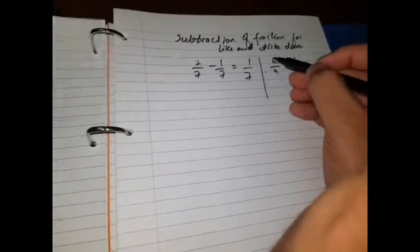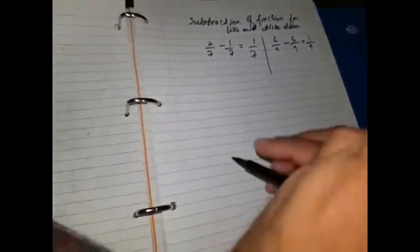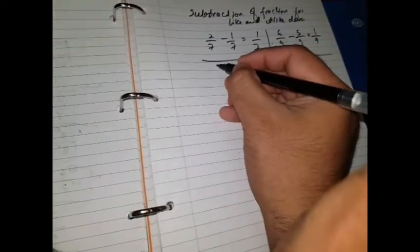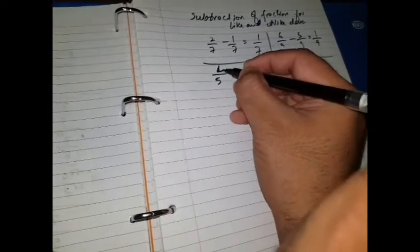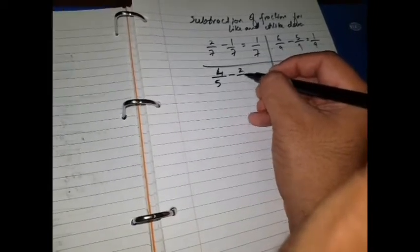Another question when denominator is same: 4 over 5 minus 2 over 5. Denominator is same, no issues. 4 minus 2, 2 over 5 is my answer.